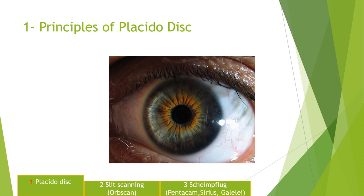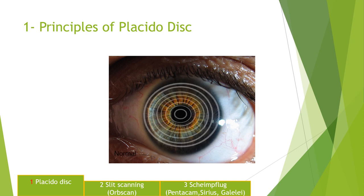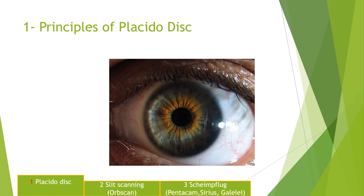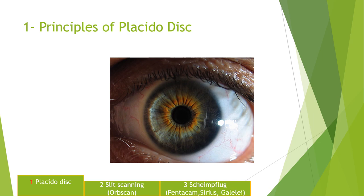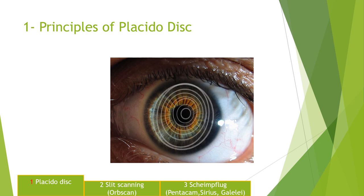This is a cornea where the rings are pretty regular — that is a regular cornea. Another cornea where the rings are regular but oblong in shape — this cornea has got astigmatism. Another cornea where the rings are irregular — this cornea has got an irregular shape. The machine then constructs the topography map and you see the different shapes. This is the principle of the Placido disk: light is reflected from the cornea and the machine makes the topography map, not the tomography map.